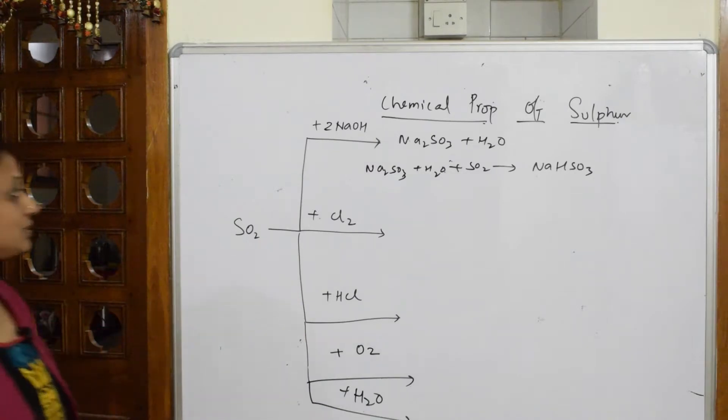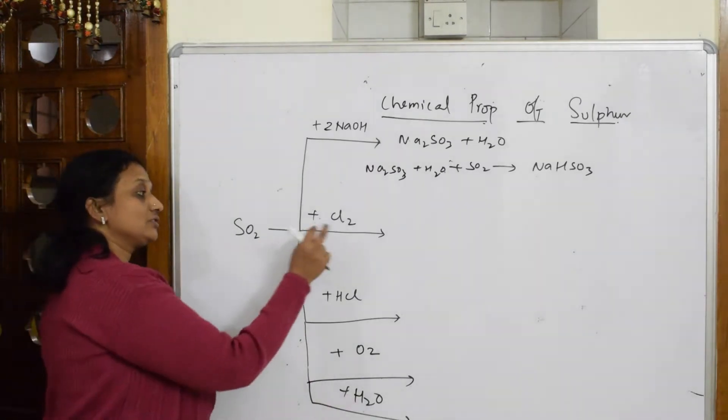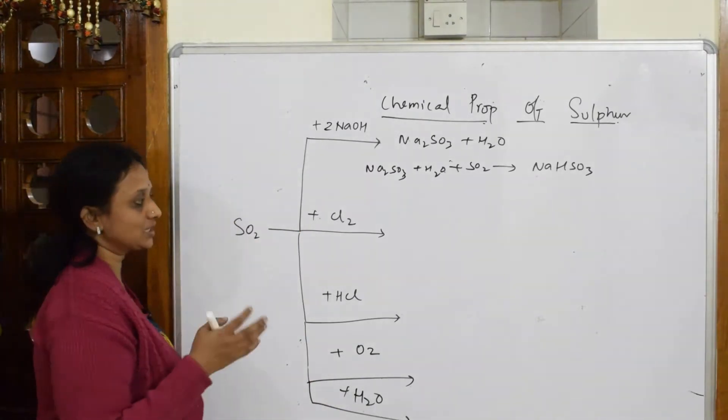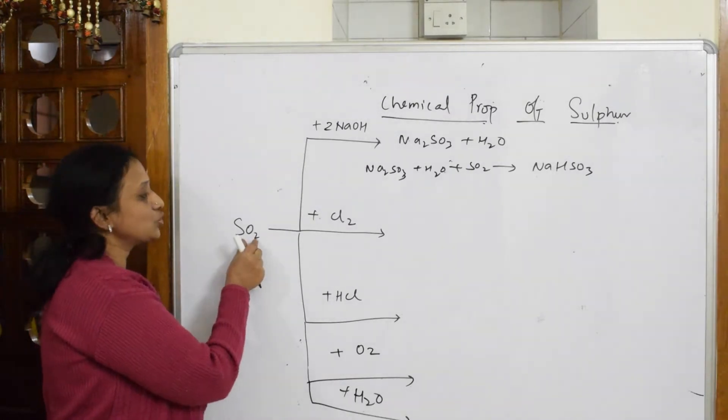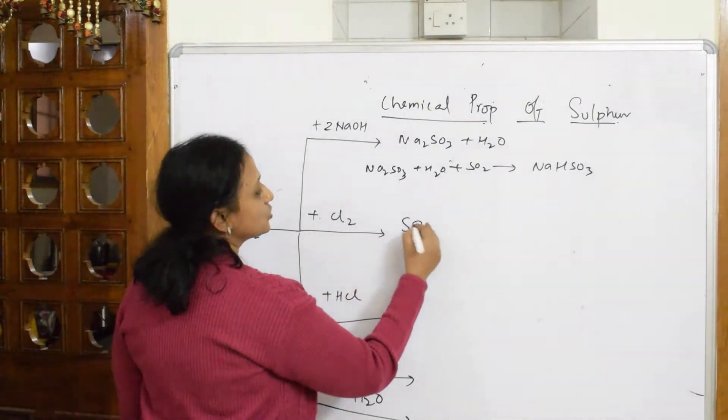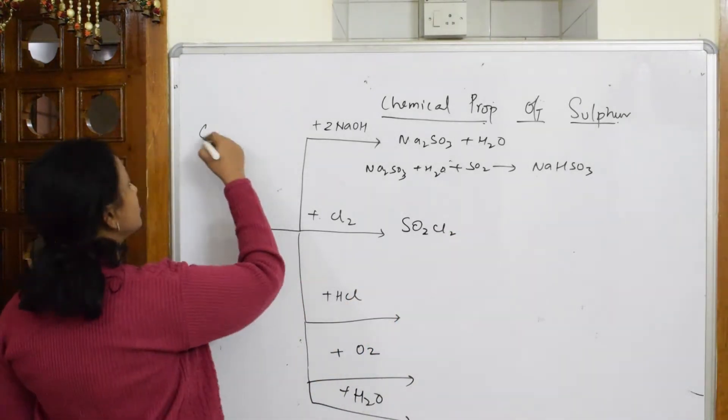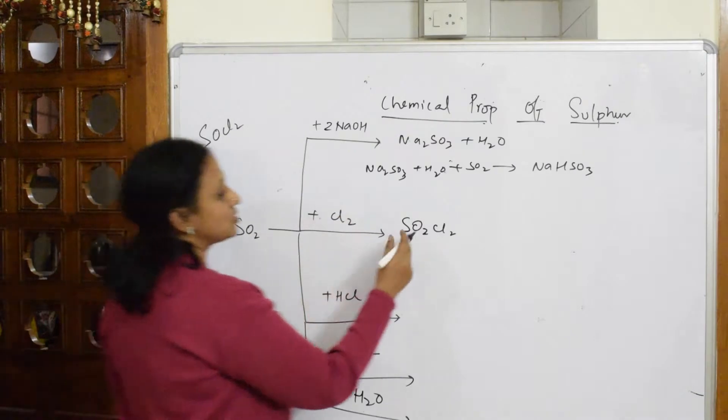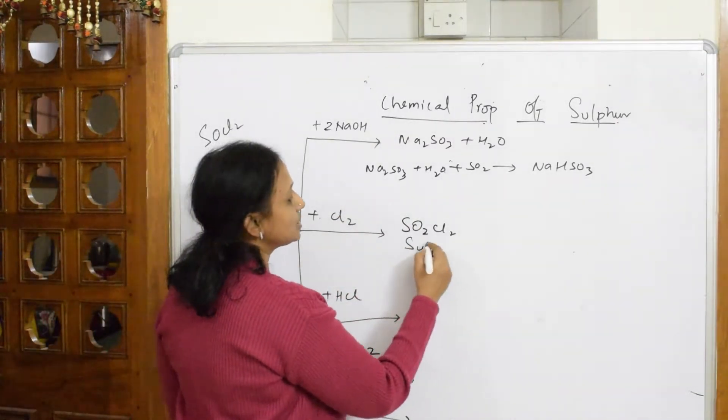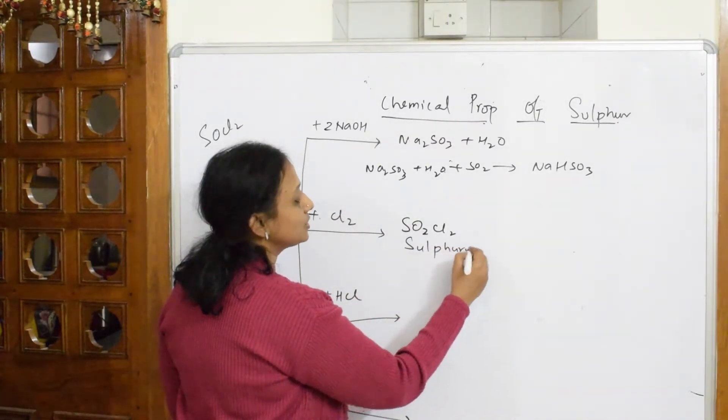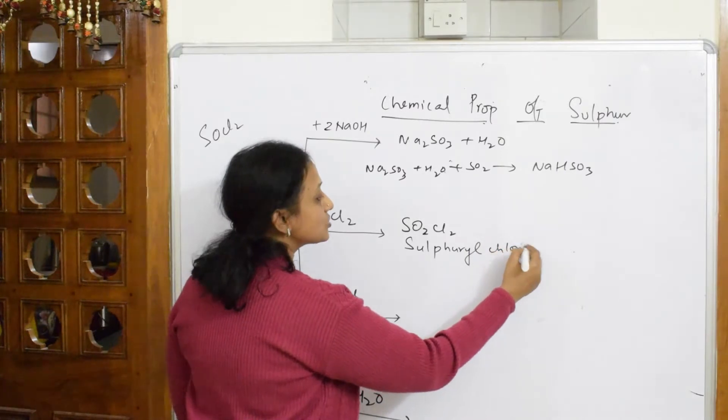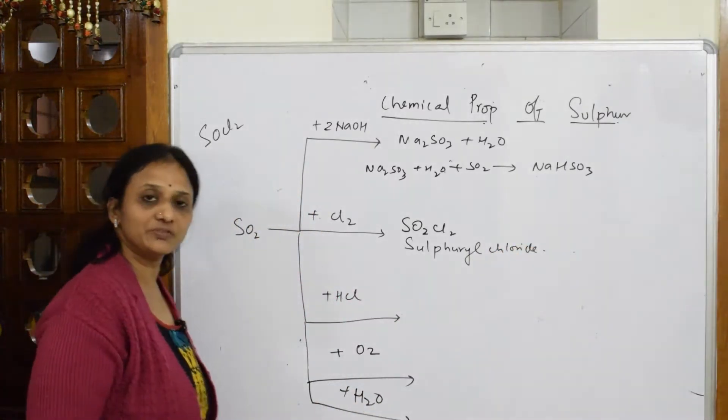Now when you see the reaction with Cl2, the product is simple. Directly you are taking SO2 plus Cl2. Remember, this compound is not thionyl chloride. Thionyl chloride is SOCl2. This is called sulfuryl chloride.